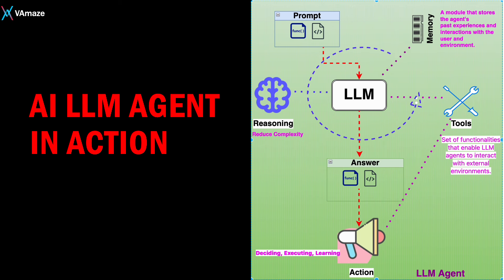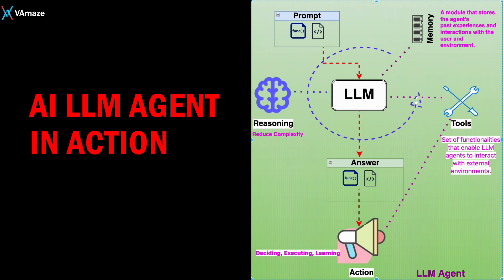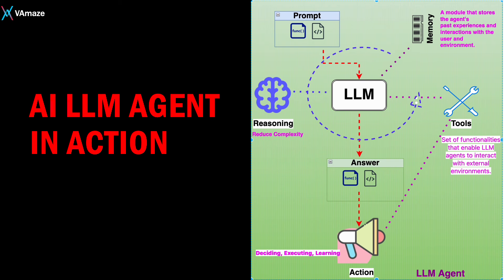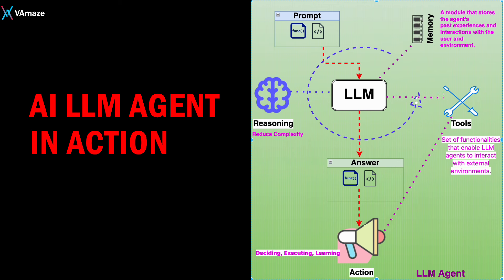The next key component is tools — a crucial function agents can leverage, from web browsers to code editors to custom APIs, amplifying their capabilities. With these integrated components, LLM agents move from being just language experts to multi-talented AI assistants that can perceive, learn, reason, plan, and take action to achieve complex goals in the real world.